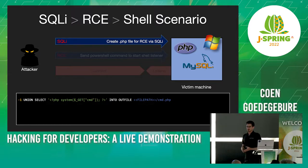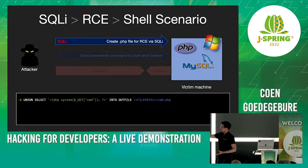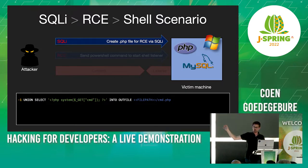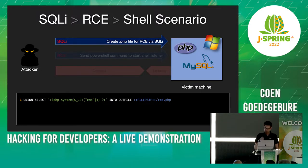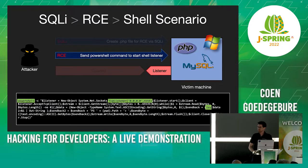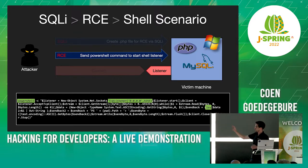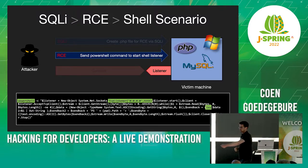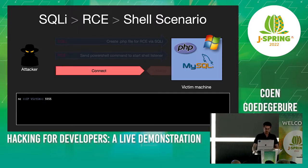I've prepared the big commands so I'll walk you through the technicalities. It's SQL injection: mine is -1 so I suppress normal output. Then UNION SELECT with a PHP string that writes a webshell to an OUT FILE at a specific path — /cmd.php. The path needs to match what the web server can serve. Then there's a PowerShell script that creates a bind shell — a TCP listener on port 5555. Anything I send over that channel gets executed and the results come back. I'm using Netcat, a low-level tool to connect over TCP.